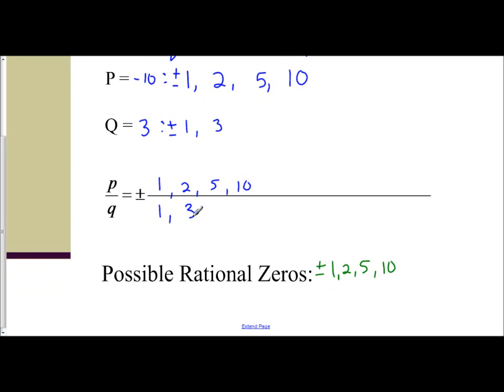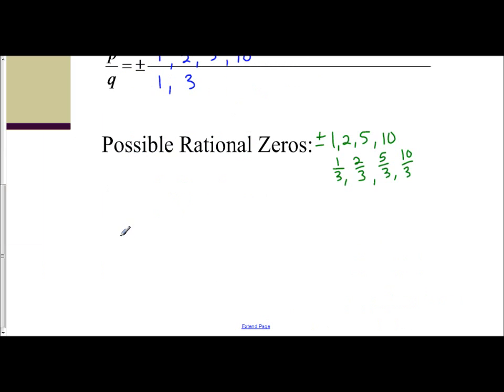And now you do the same thing with the second Q value. Take 1 and divide by 3. And that's 1 third. Take 2 and divide by 3. That's 2 thirds. 5 and divide by 3 is 5 thirds. And 10 divided by 3 is 10 thirds. And we have the plus or minus of all of these. Now, if you want to be picky, you can go ahead and put them in numerical order. Plus or minus 1 third, 2 thirds. Because those are less than 1. Then we have 1. 5 thirds is less than 2. So we have 5 thirds, 2. 10 thirds is less than 5. Then 10 thirds, 5, and 10. If you want to be picky so you can see them in numerical order, this is a list of your possible rational zeros.